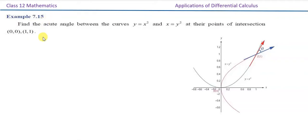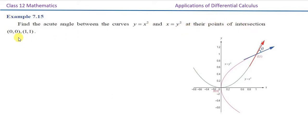Welcome to our channel. In this video, plus 2 max unit 7, example 7.15: Find the acute angle between the curves y is equal to x squared and x is equal to y squared at the points of intersection (0,0) and (1,1).